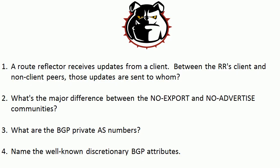For the well-known discretionary BGP attributes, those are our old friends: local preference and atomic aggregate. Thanks so much for taking today's route video bootcamp. We've got plenty more on the way and already there on my YouTube channel. Hope to see you out there. I'm Chris Bryant — thanks for making us part of your CCNP success story.